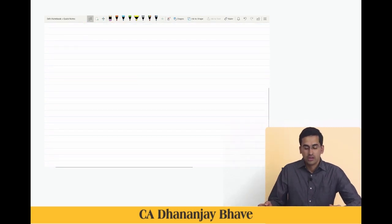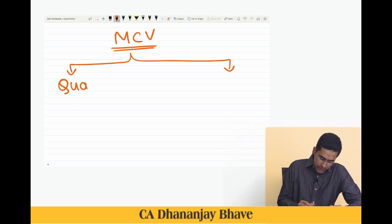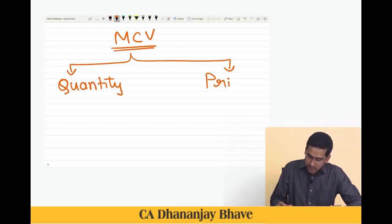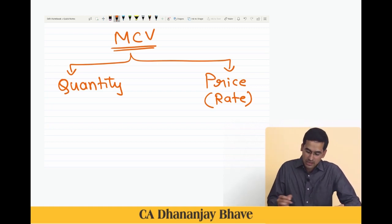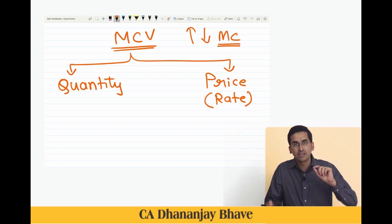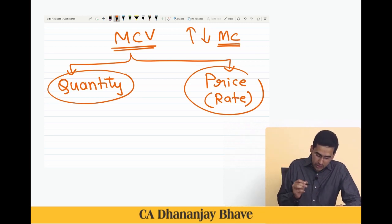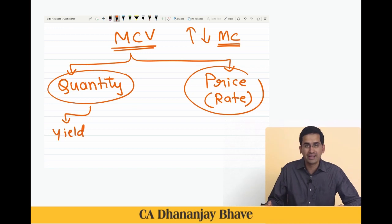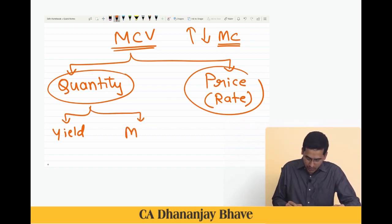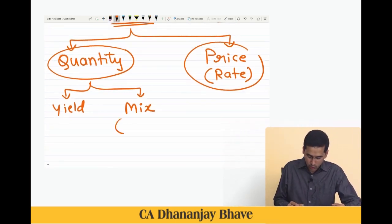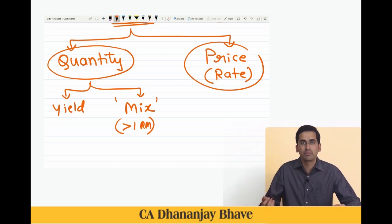Material cost variance arises due to two reasons: quantity and price — some books use the term 'rate' for the price variance. An increase or decrease in material cost can be because we have consumed more quantity or paid a higher price. A quantity increase can further be due to yield — the ability of raw material to generate output — or because of an incorrect mix when more than one raw material is used.